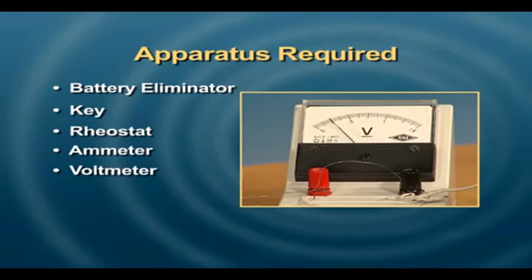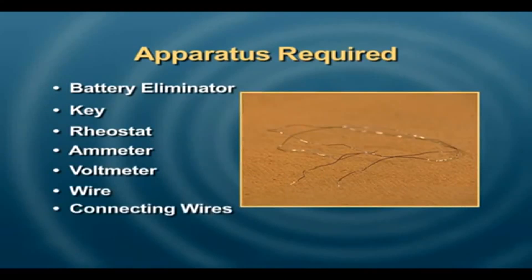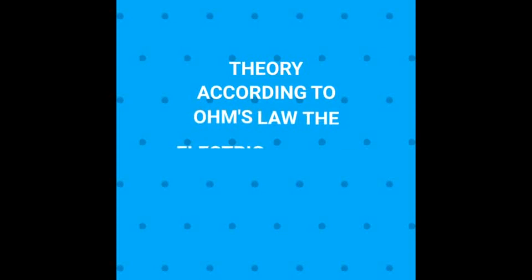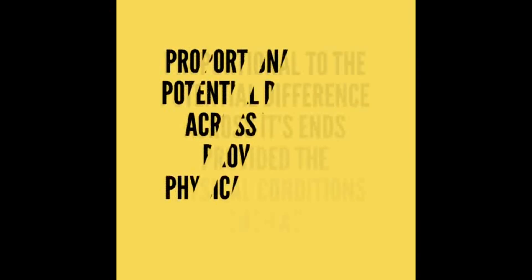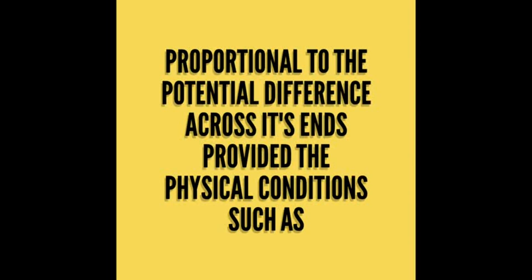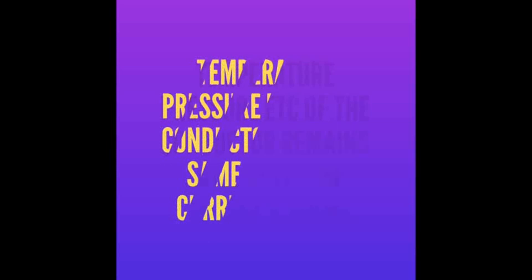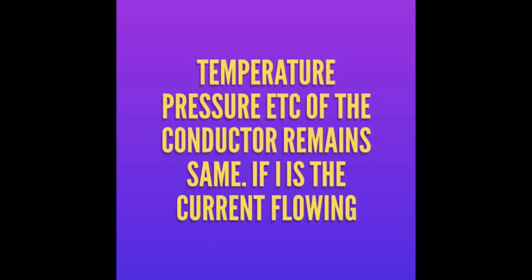According to Ohm's law, the electric current flowing through a conductor is directly proportional to the potential difference across its ends, provided the physical conditions such as temperature, pressure, etc. of the conductor remain the same.